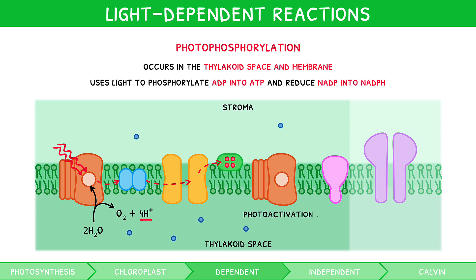Next, photoactivation 2 occurs at photosystem 1. This process is identical to before, except that the two photons of light only promote one electron. Like previously, this excited electron is donated — this time to ferrodoxin — which itself is reduced. This process occurs twice, thereby producing two reduced ferrodoxin and removing two electrons from the chlorophyll at the reaction centre — i.e. half as many as photoactivation 1. Plastocyanin from photoactivation 1 then donates its electrons to photosystem 1, replacing the electrons lost in photoactivation 2.